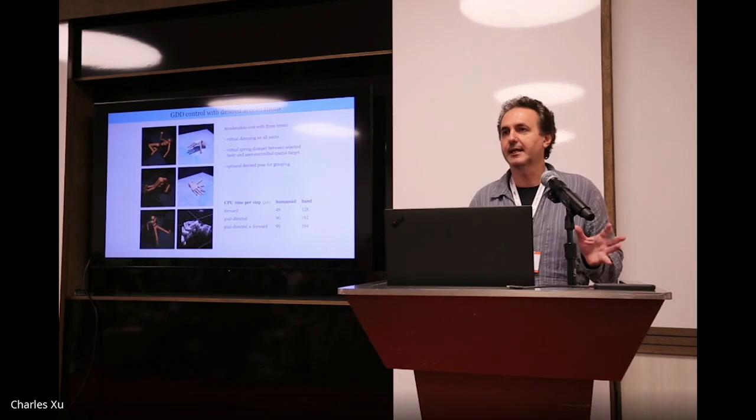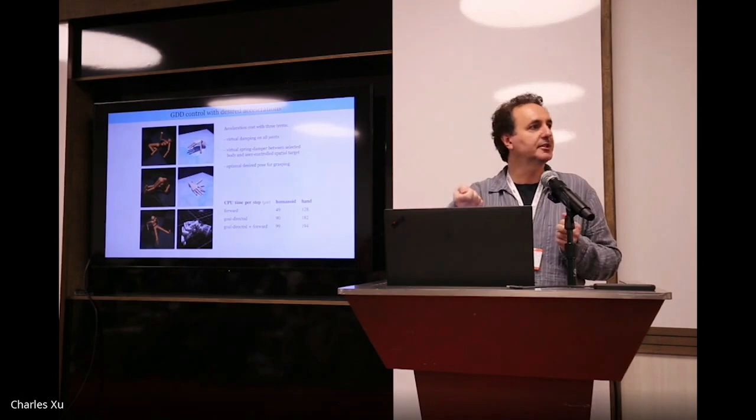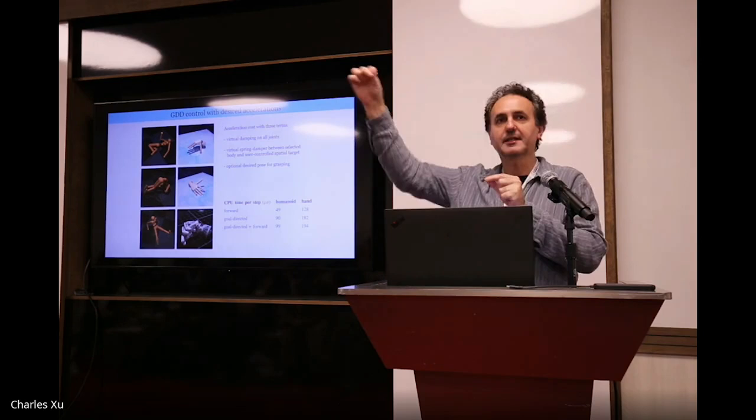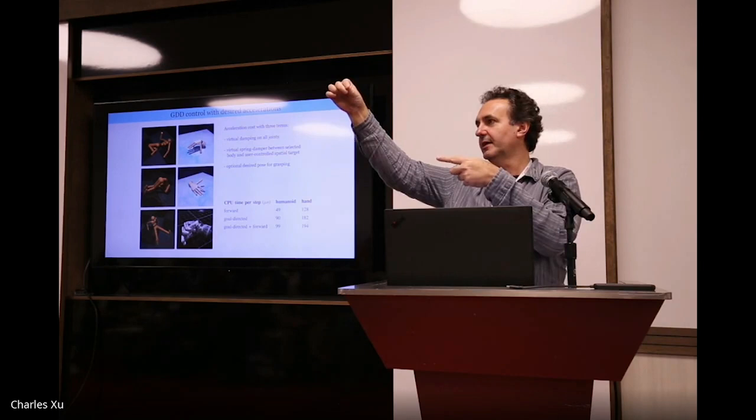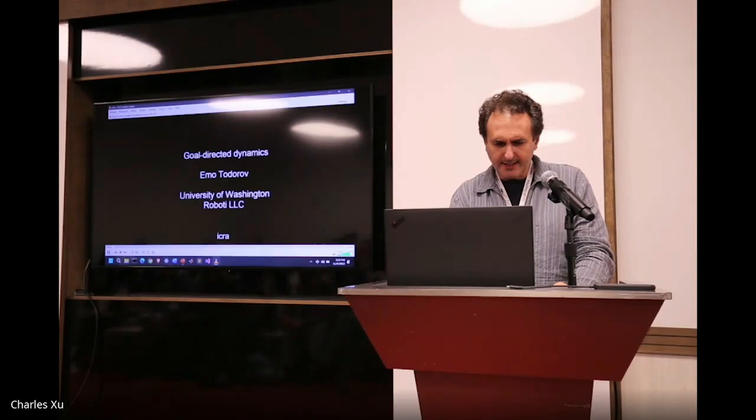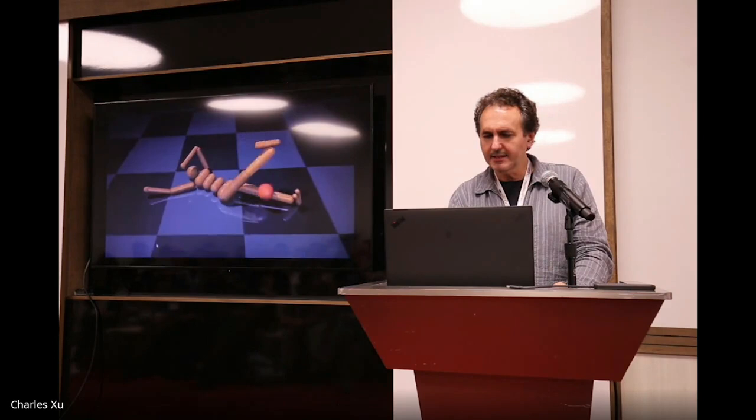So let me show you an example. Here I'm just going to do this heuristically. I'm going to be a designer of those desired accelerations, hand it down to GDD Dynamics and see what it does. I'm going to select a body part on this model. I'm going to have a spatial target that says, where do I want to go? Then my desired acceleration will be the acceleration of a spring damper that just accelerates towards that target.